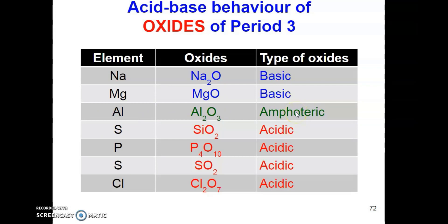Sodium and magnesium form basic oxides as metal or alkaline. On the other hand, non-metallic oxides, which are silicon oxides, phosphorus oxides, sulfur dioxide, and chlorine oxides are acidic oxides. In the middle, between basic oxides and acidic oxides, we have aluminium oxides, which is amphoteric oxides. Amphoteric oxides can behave both in acidic and basic manners depending on the condition.